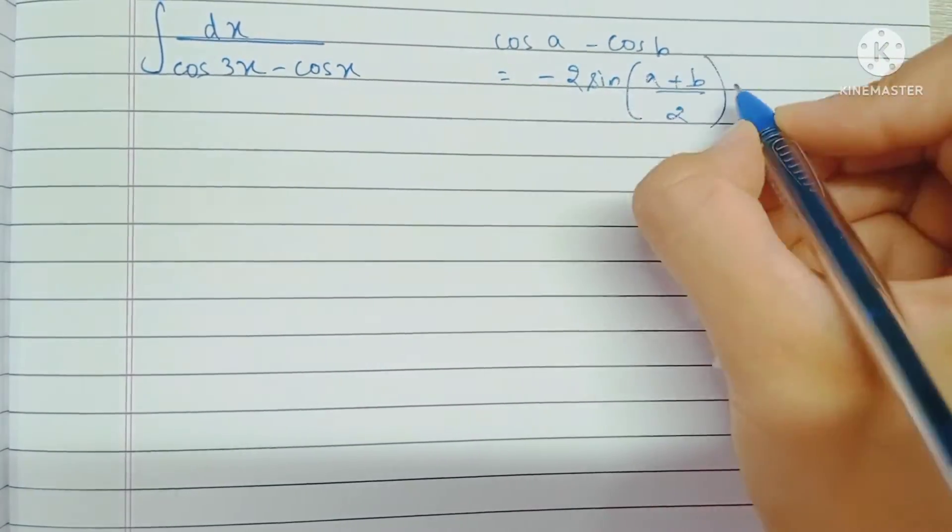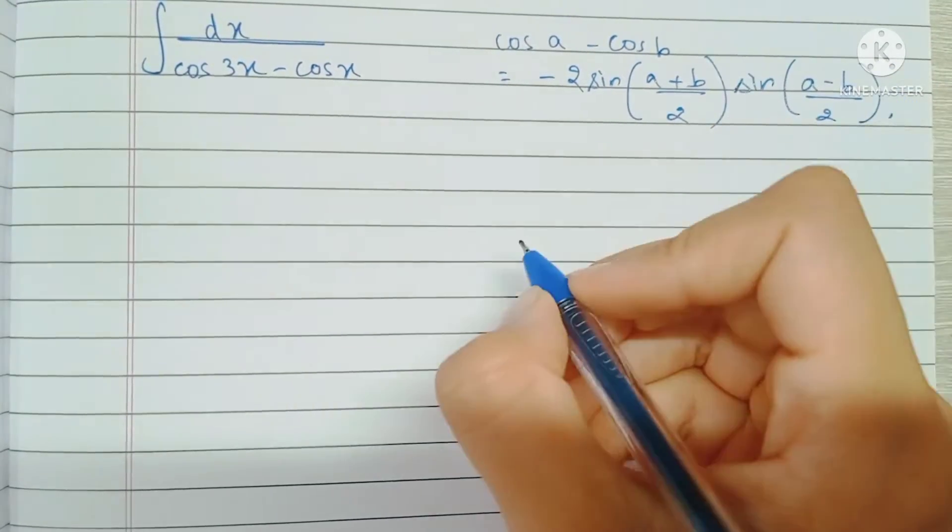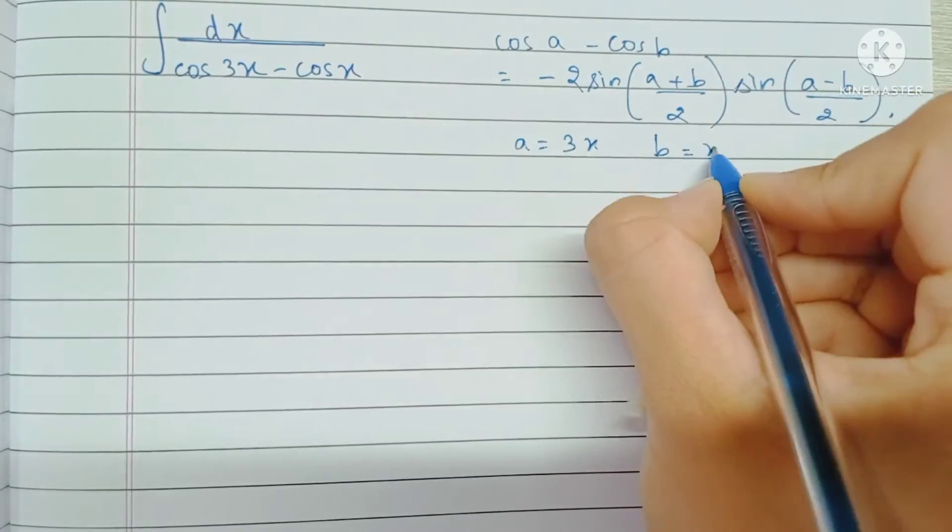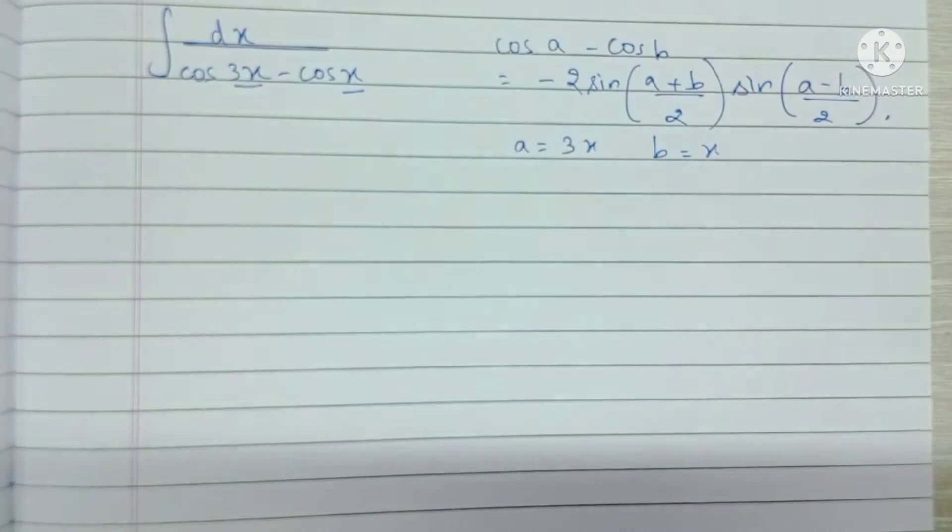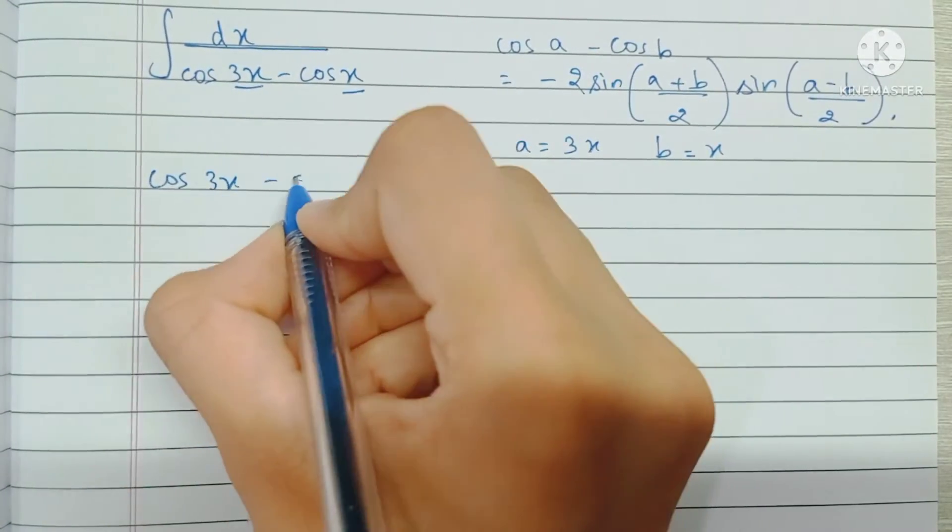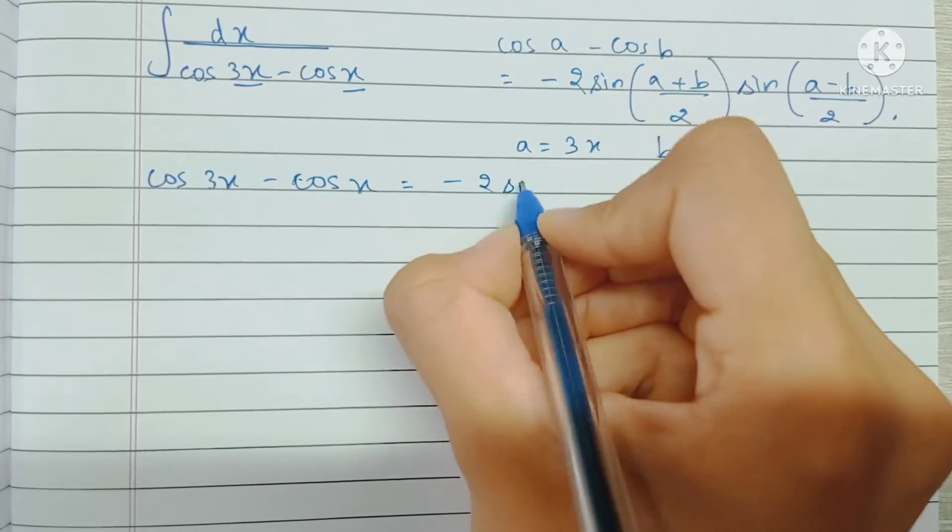So here our a is 3x and b is just x. Therefore, cos 3x minus cos x can be written as minus 2 sine 3x plus x by 2 into sine 3x minus x by 2.